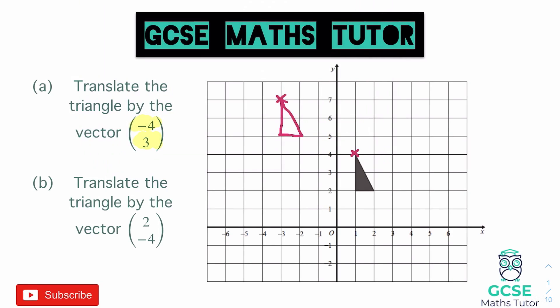The next part uses a different vector: two on the top and minus four on the bottom, meaning two to the right and four down. I'll pick the bottom right corner this time — one, two to the right, then one, two, three, four down. Mark that point and draw the triangle in from that bottom right corner: draw the base in, then up two, and join it up neatly with a pencil and ruler.